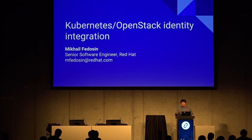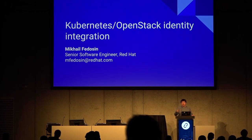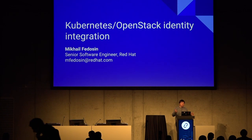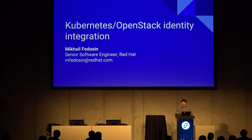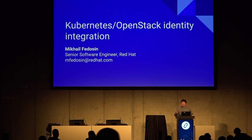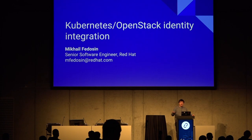Today's session will be dedicated to identity integration between Kubernetes and OpenStack. In this talk, I'm going to cover new advanced features we have added to Kubernetes to improve current integration with the Keystone service. The idea was to make Keystone a native identity provider for Kubernetes, like it's done with Nova or Neutron or any other OpenStack service. That was our goal.